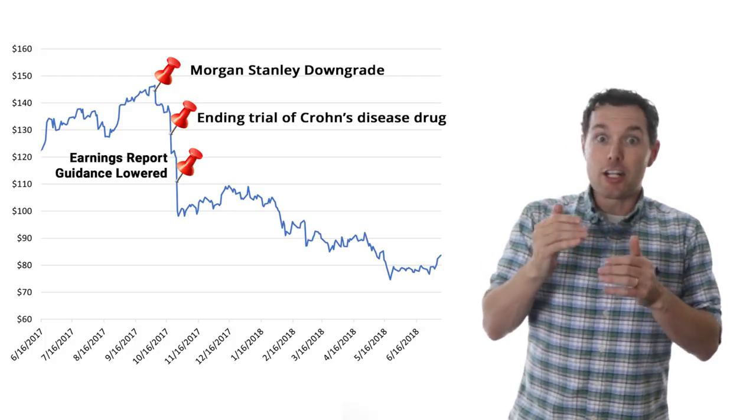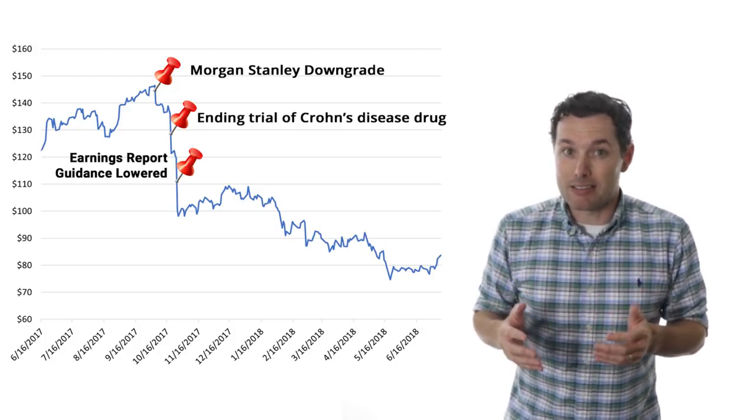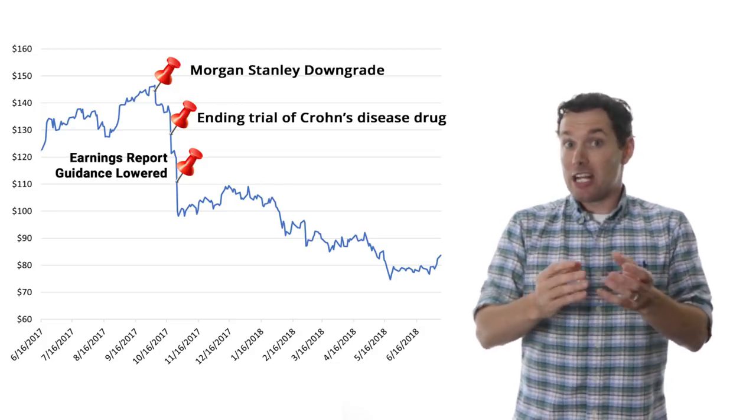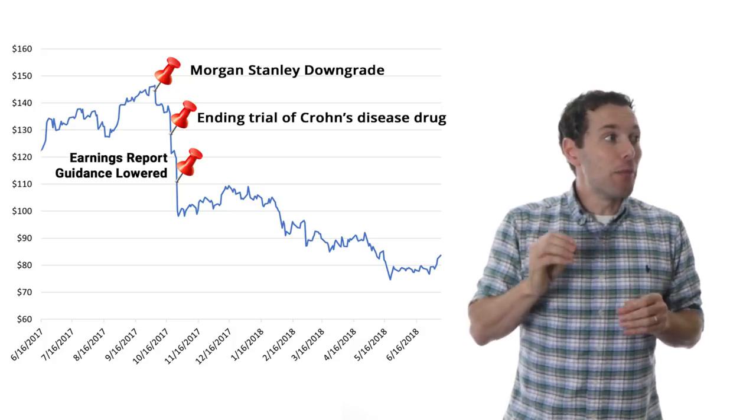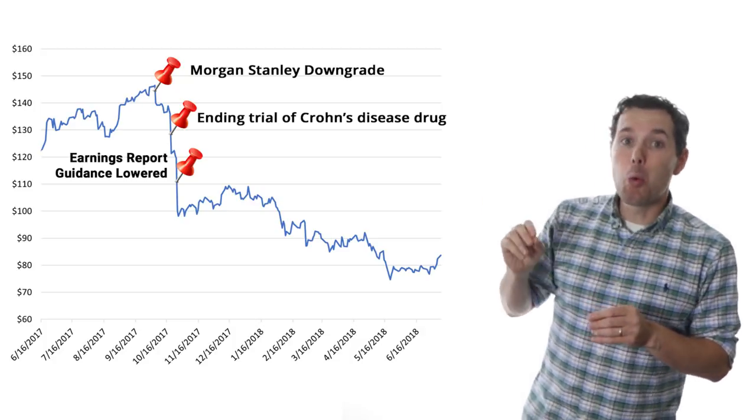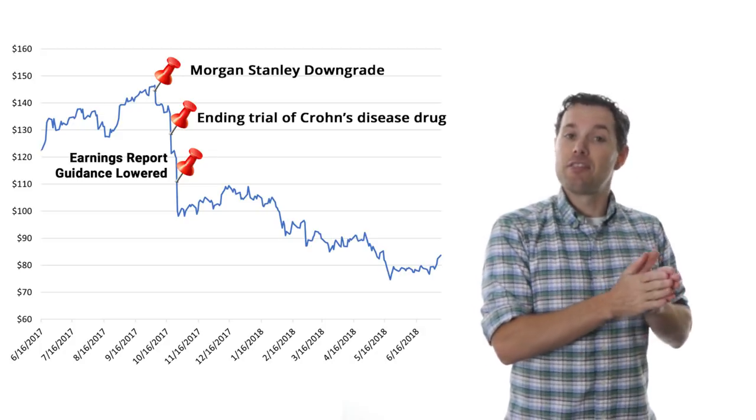Specifically, what they did was lower 2020 earnings per share guidance from $13 a share to $12.50. Okay, once again jumping forward in time a bit, we see that right about here Celgene announced the acquisition of Juno Therapeutics for about 9 billion dollars.